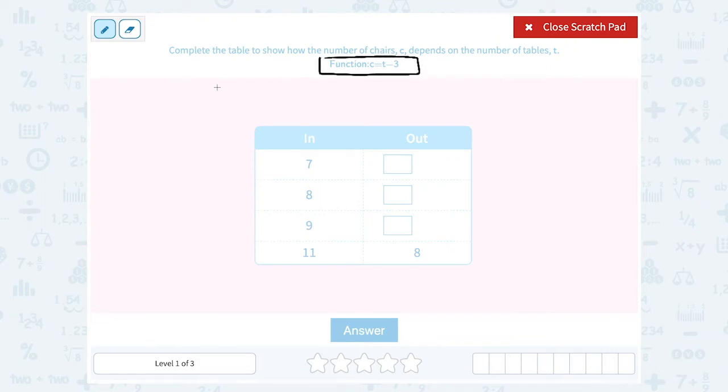When you have input and output for a function, if I have c is equal to t minus 3, the input would be this number. Because we're going to put that number in, we have to subtract 3 from it, and then we get the output, which means the answer, which would be c.